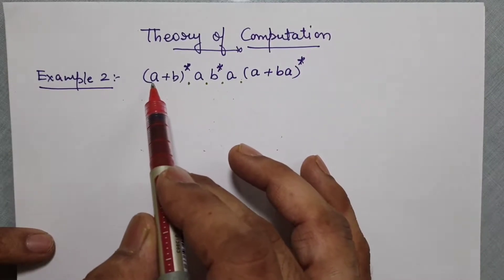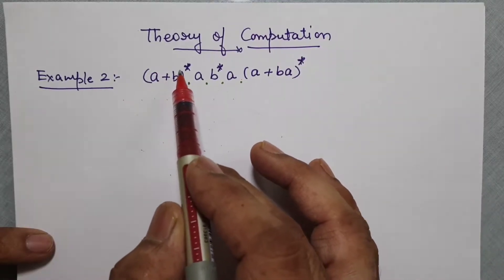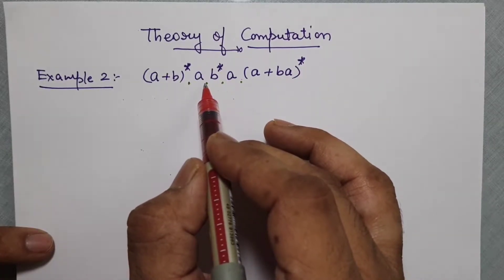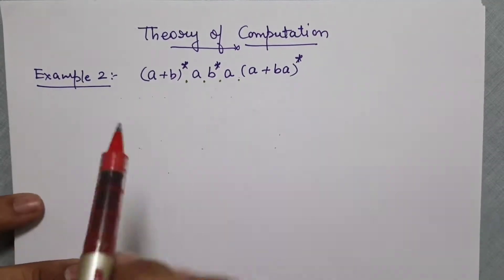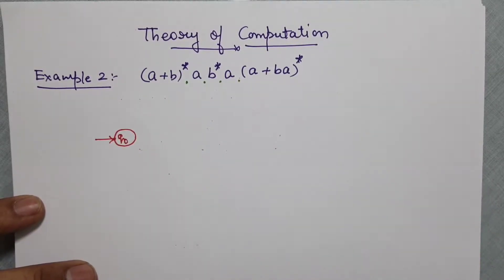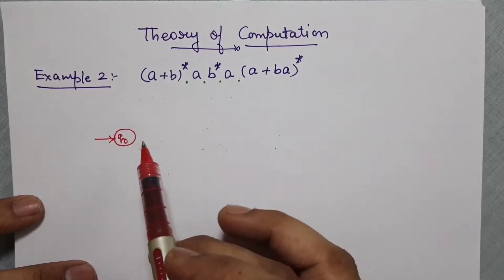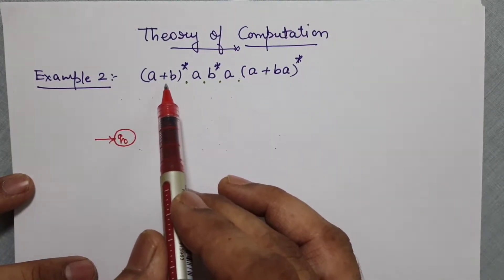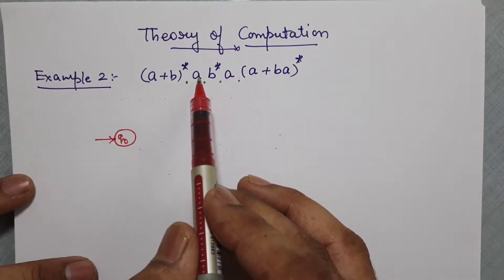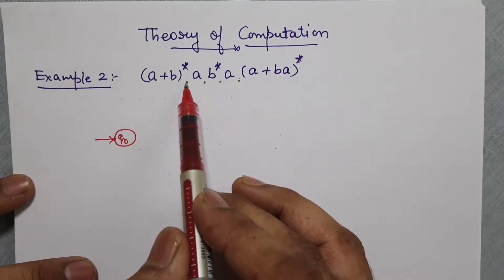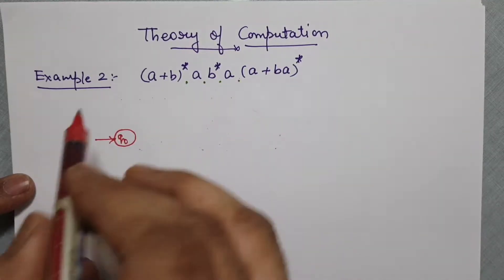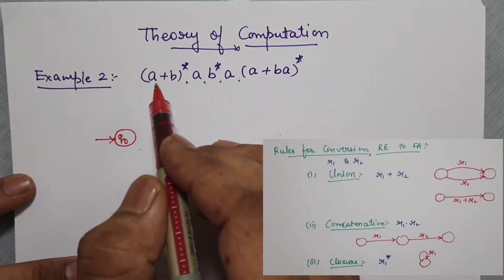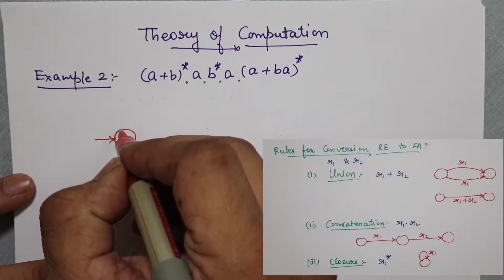Let us start doing this. First is the regular expression (a+b)*, and after that on concatenation we go to the second state. We will draw one state at a time. So here it is (a+b)* then concatenated with a. This is a closure, and closure we know is represented by a self loop, so here it will be a self loop of a+b.